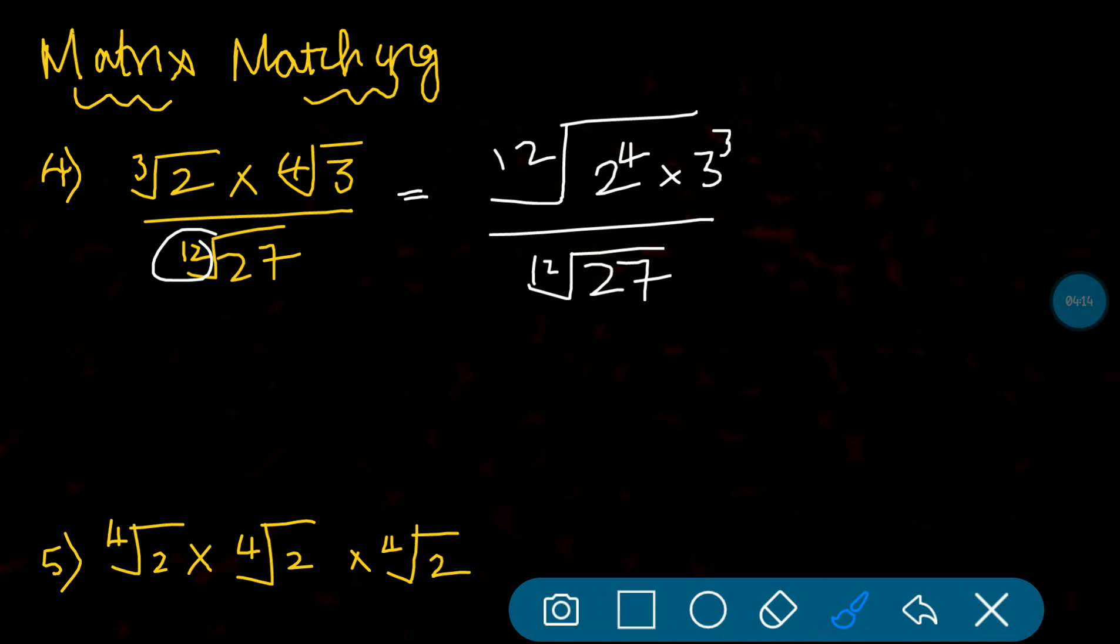Now what you can do is take 12th root as common. Now 2 power 4 and 3 cube you have to multiply - answer would be 432 divided by 27. Now just divide this. When you divide this, answer is 12th root of 16, which is option B.